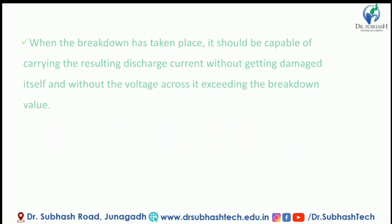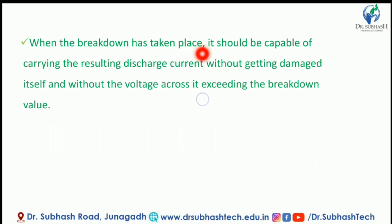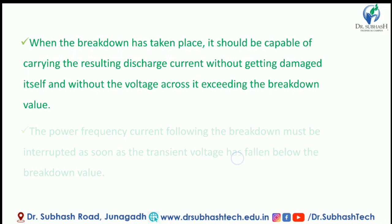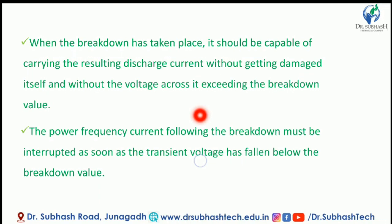Once breakdown has taken place, it should break down as quickly as possible and be capable of carrying the resulting discharge current without getting damaged itself, with the voltage across it not exceeding the breakdown value. The power frequency current following the breakdown must be interrupted as soon as the transient voltage has fallen below the breakdown value.